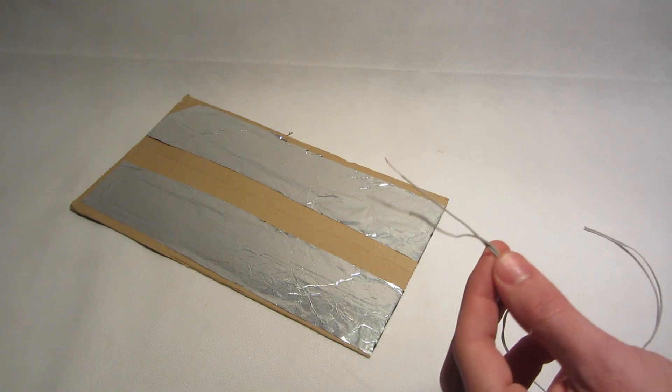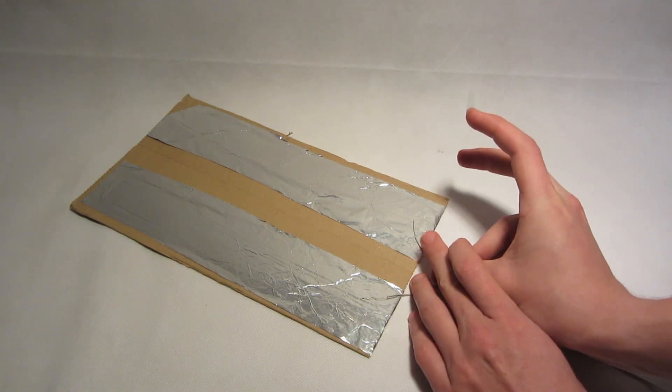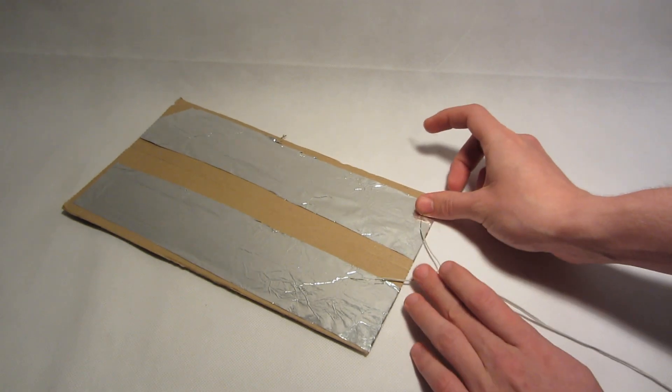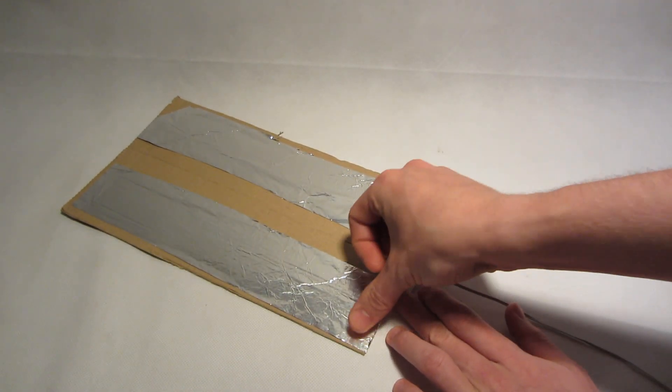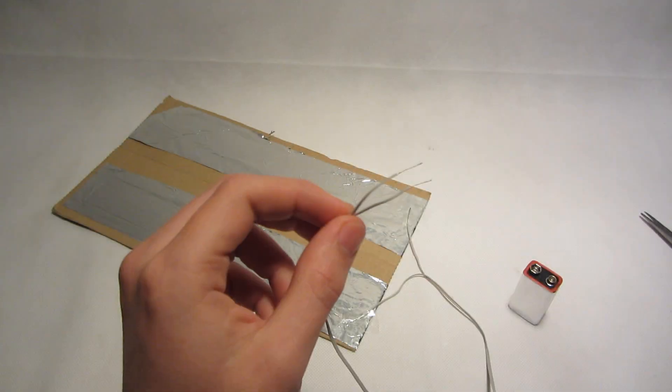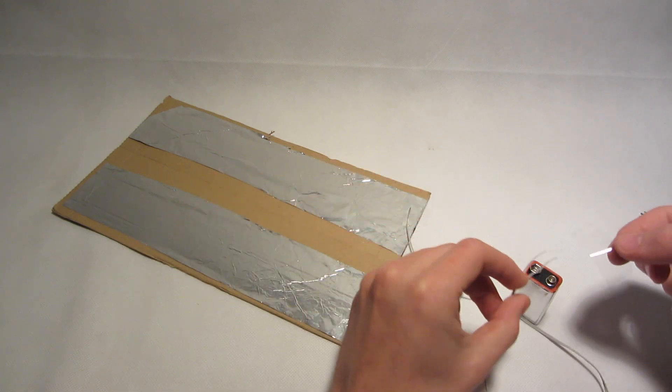Now find some wires and glue them through the rails. Take the other end and connect it to your battery.